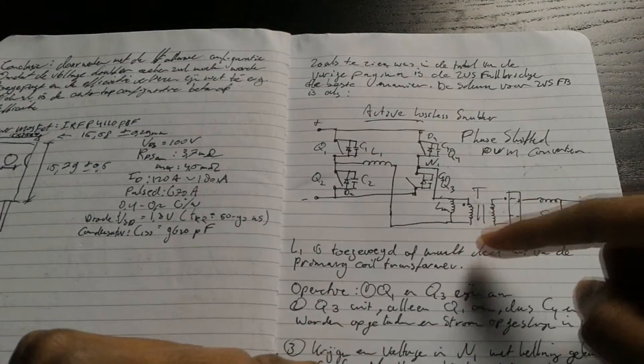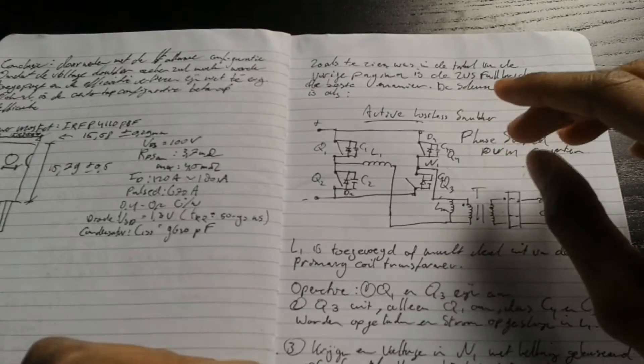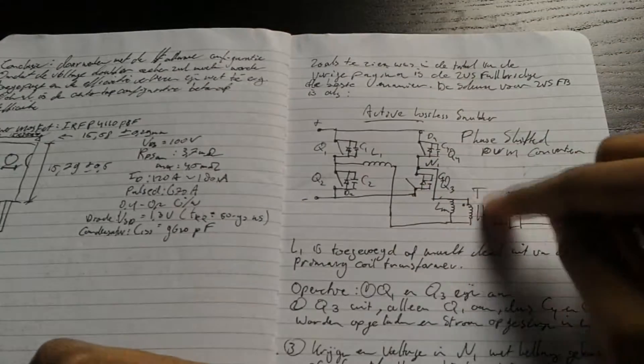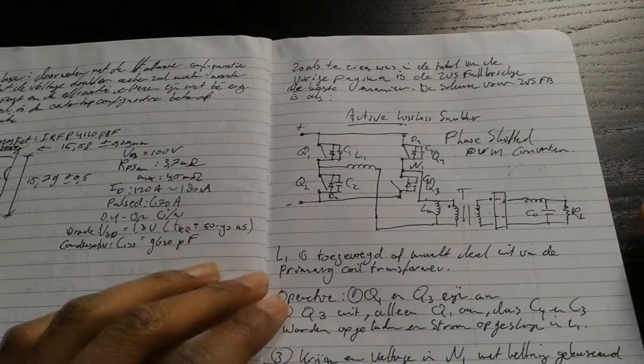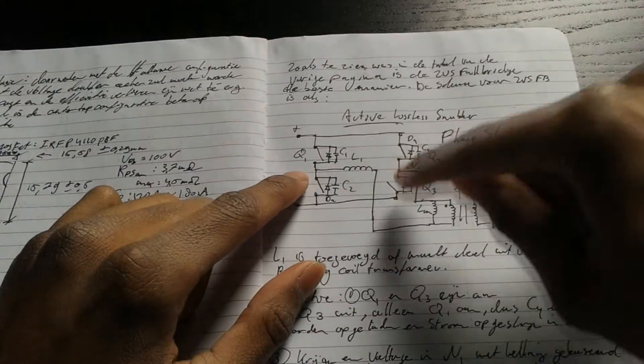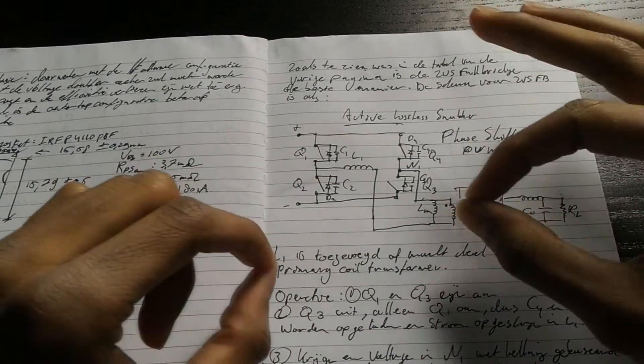We get a nice zero voltage switching while having still the normal half cycles. What is going to be the challenge here is to have every single MOSFET turn on and off at their own specific timings.